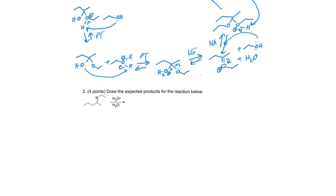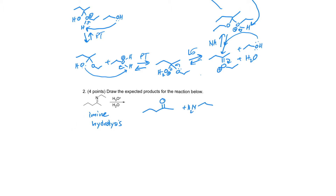Question number two: draw the expected products for this reaction. This is an imine — we have acid and water present — and so basically we're going to hydrolyze the imine, forming a carbonyl in place of the imine at this carbon, and forming an amine. The amine will have one R group on it, the ethyl group. So this is an imine hydrolysis. You should be able to draw this mechanism too; it is in your textbook and it is very similar to the one we just drew on question one, except in this case we're going backwards — adding water to our carbonyl derivative functional group to reform the carbonyl and form the amine.